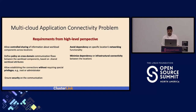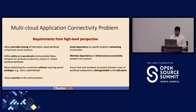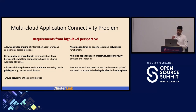Fifth is to avoid dependency on a specific location's networking functionality, whether the container network interface or the specific cloud networking. Sixth is to minimize the dependency on infrastructural connectivity between locations, whether there is a peered network or the internet between them. And finally, seventh is to ensure that each workload connection can be distinguishable in the data plane, to observe what is happening, know if something is wrong, and apply policies at that level.